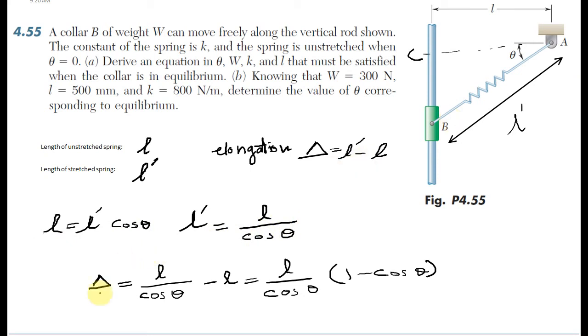From this triangle, Delta is L prime minus L, or L over cosine theta minus L. I can rewrite it as L over cosine theta times one minus cosine theta.